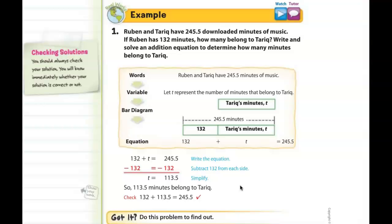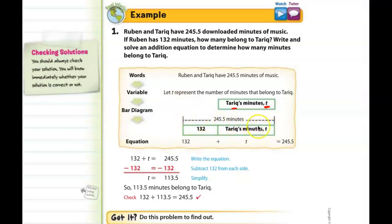Ruben and Tariq have 245.5 downloaded minutes of music. If Ruben has 132 minutes, how many must belong to Tariq? Write and solve an addition equation to determine how many minutes belong to Tariq. What we don't know is what Tariq has, so the variable T is probably a good letter to use to represent that unknown quantity. Together they have 245.5 minutes, so the long bar has been labeled 245.5 minutes. The two pieces together are going to equal that — one is the unknown Tariq's minutes and the other is Ruben's 132 minutes.